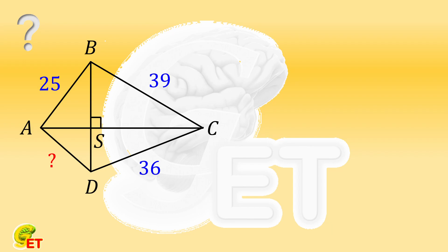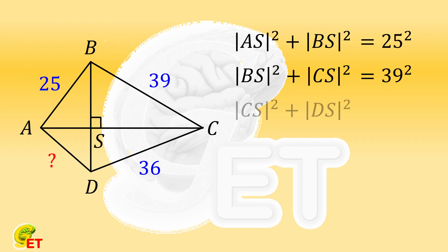We apply the Pythagorean theorem in each right triangle, so we have the square of AS plus the square of BS equals the square of 25. The square of BS plus the square of CS equals the square of 39. The square of CS plus the square of DS equals the square of 36.